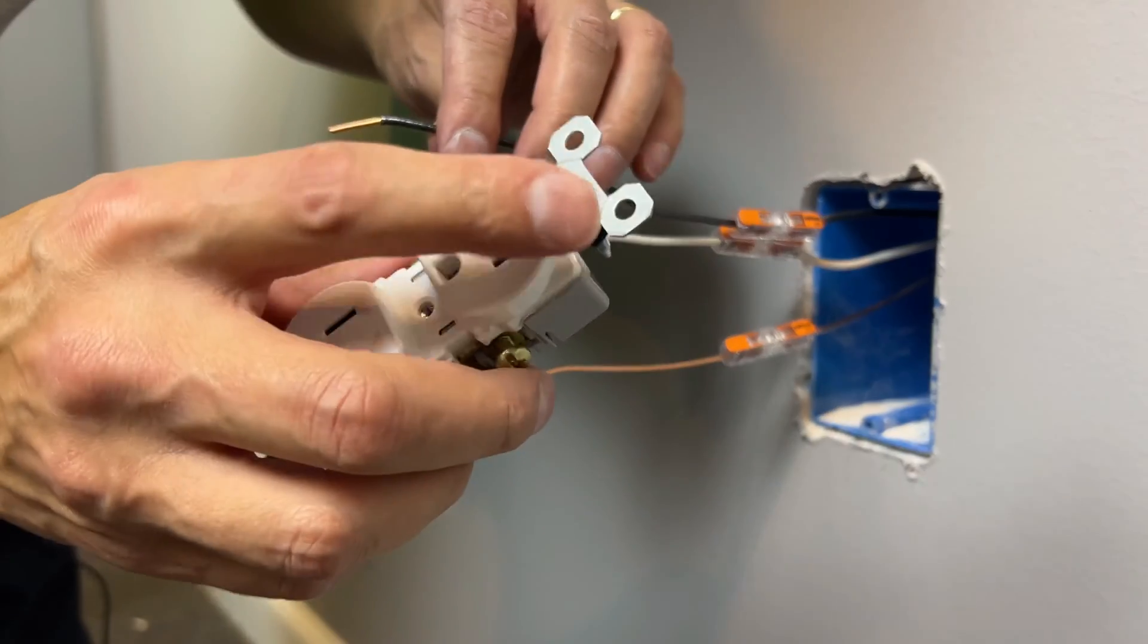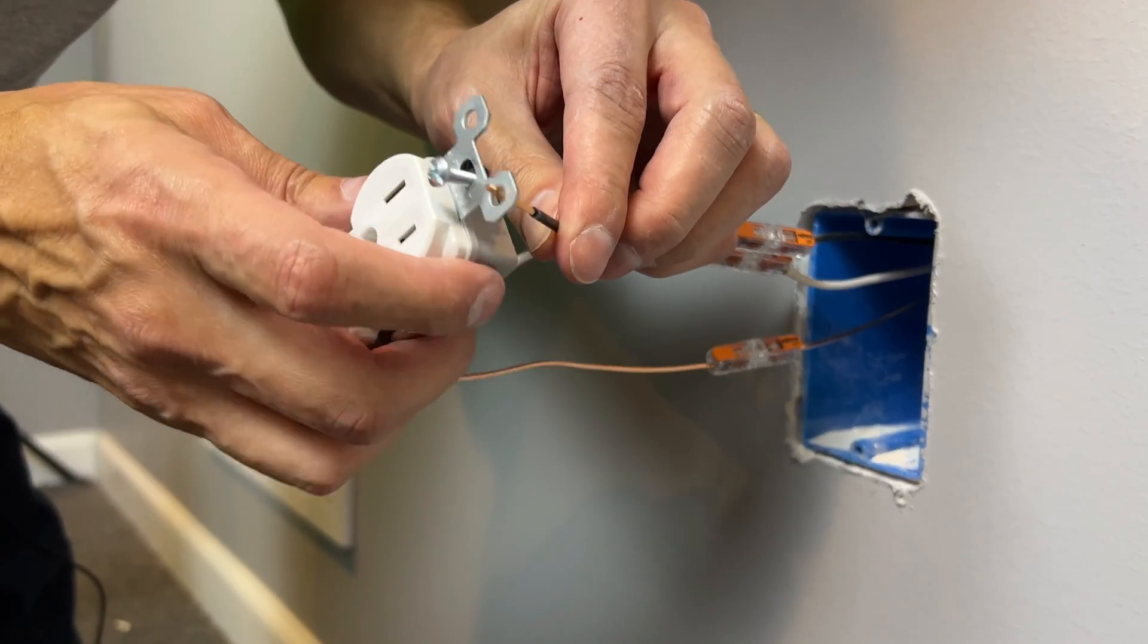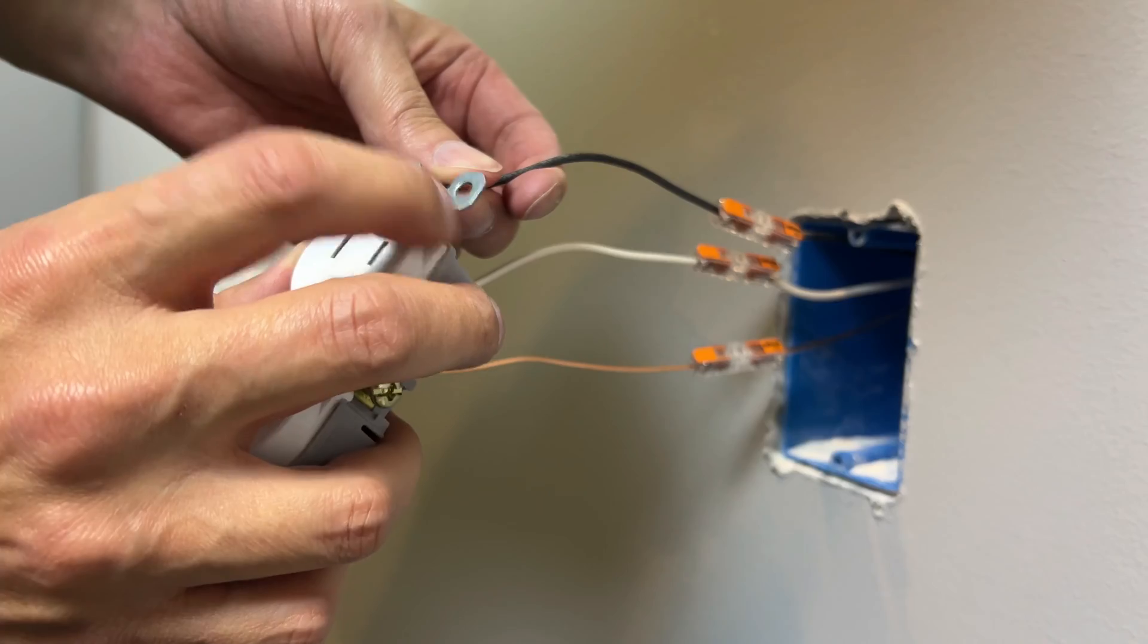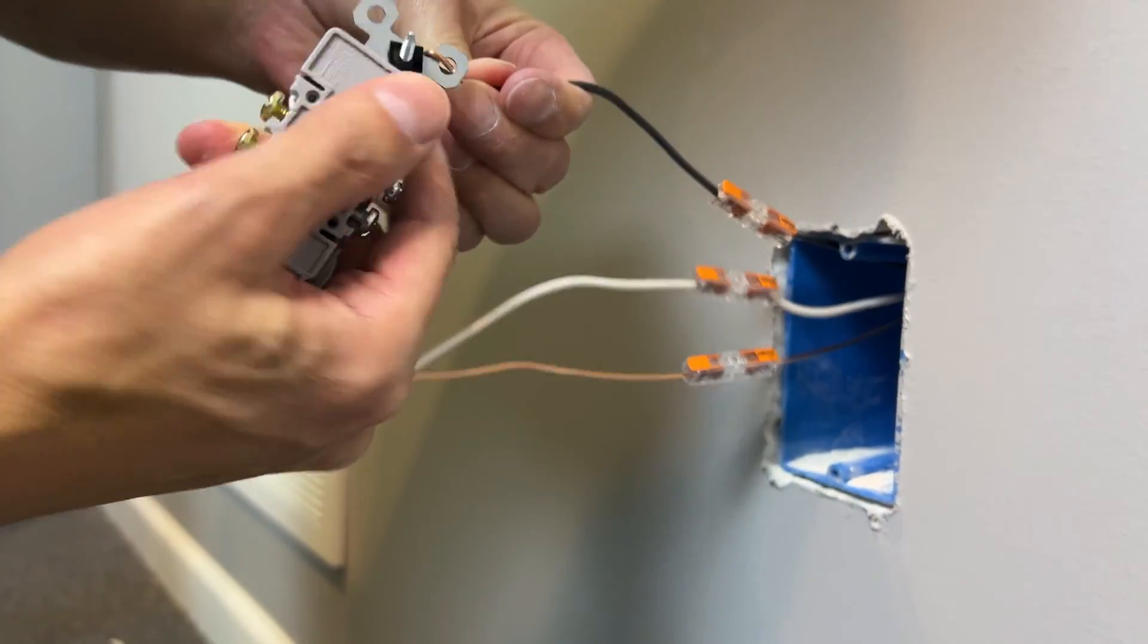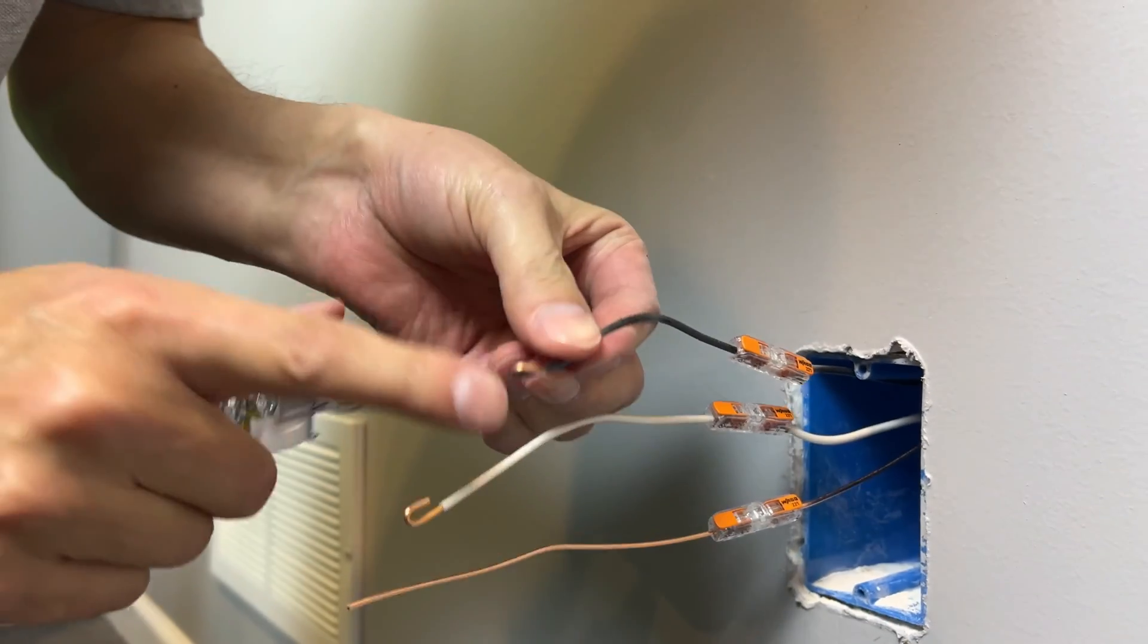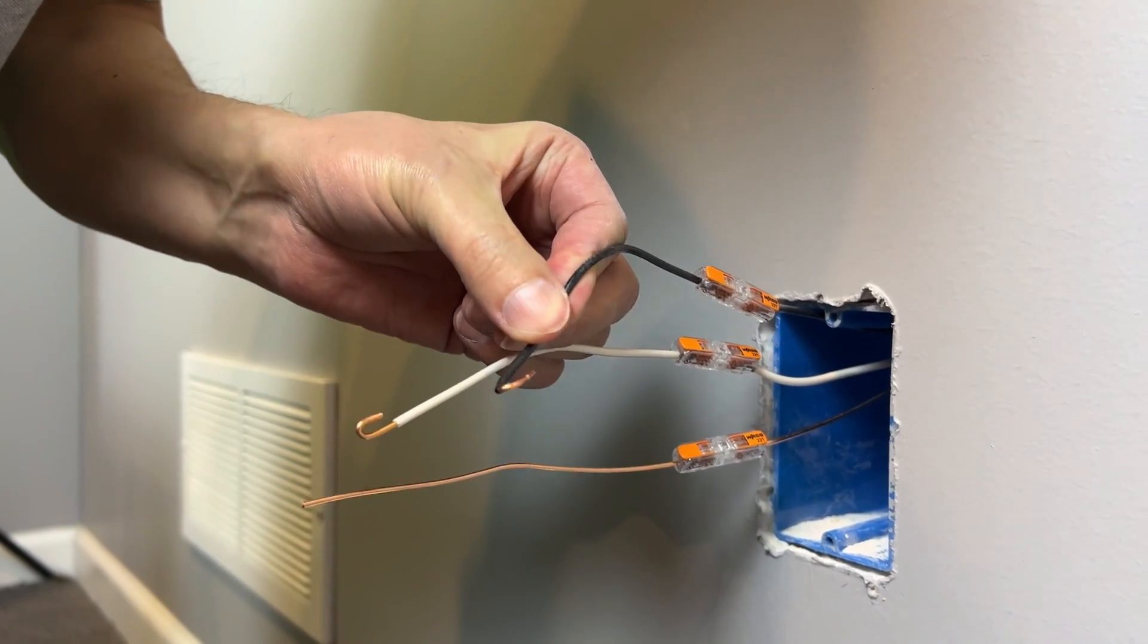If you have this type of outlet you actually can use the circle connector, you can actually use that little dog ear there to make a twist on your wire. Look at that, easy to do, you don't even have to have a pair of pliers.